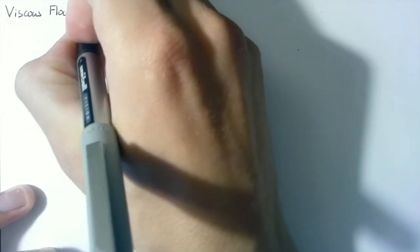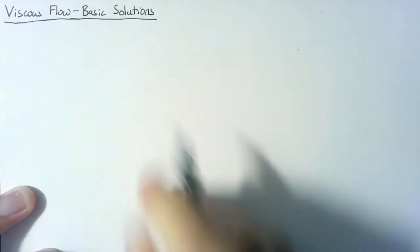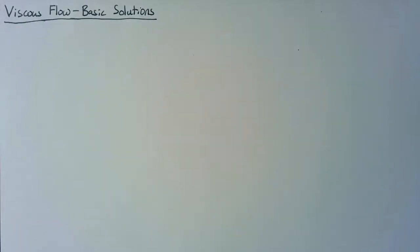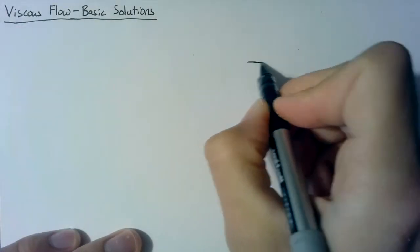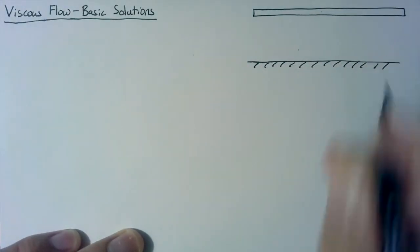Now, in general, the equations for fully viscous flow are really complex. But if we have some really simple cases, then we can actually come up with some good solutions for them. So the first case we're going to be looking at is just flow between two flat plates.